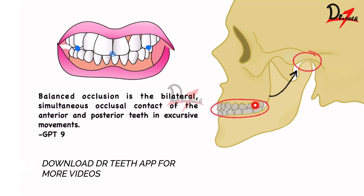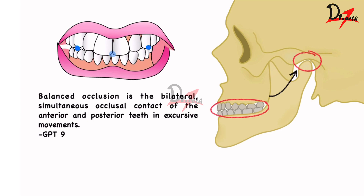We also have the term maximum intercuspation (MIP), which means all the teeth are in maximum contact, but the patient may or may not be in centric relation. MIP may or may not coincide with centric relation. For example, if the patient is in centric relation but the teeth have little spaces, that is centric occlusion but not MIP. When you allow the patient to close on maximum intercuspation, the jaw relation might change.